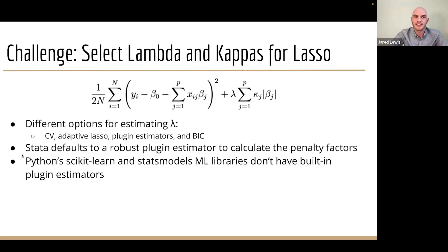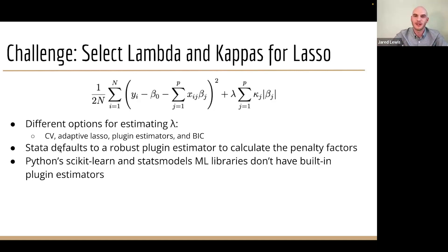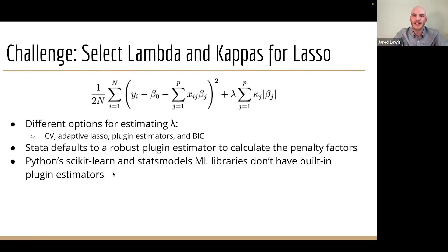Stata defaults to a robust plug-in estimator to calculate the penalty factors, and it's just built in — it happens by default whenever you run double lasso. But Python's scikit-learn and statsmodels, the machine learning libraries we were using for lasso — we ended up on statsmodels — neither of them have built-in plug-in estimators. So we built out our own.